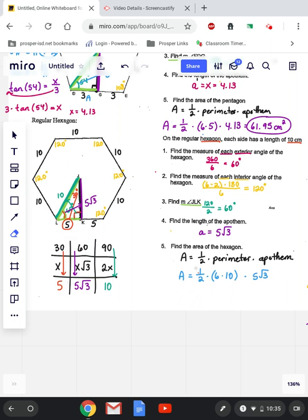So there are two different ways that you could answer this. You could leave it in simplified radical form, where you just multiply everything together and leave the square root of 3 alone. Or you can type it all into your calculator. If I left the square root of 3 alone, I would just do 1 half times 6 times 10 times 5. And 1 half times 6 times 10 times 5 would be 150.